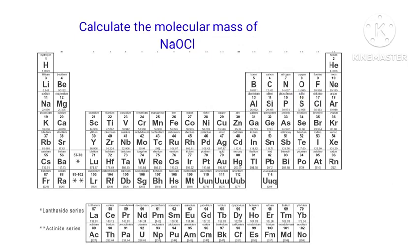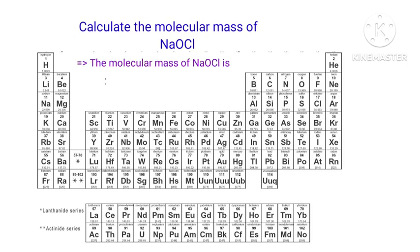In NaOCl there are 1 sodium atom, 1 oxygen atom, and 1 chlorine atom present. So the molecular mass of NaOCl is 22.990 plus 15.999 plus 35.453, which is equal to 74.442 gram per mole.